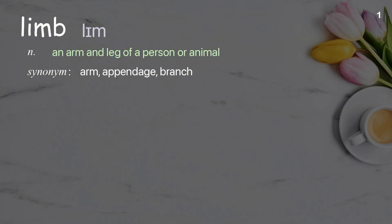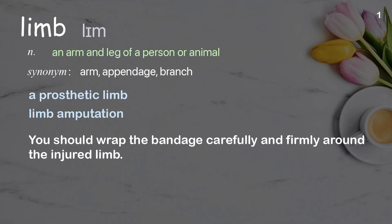Limb: an arm and leg of a person or animal. Examples: a prosthetic limb; limb amputation. You should wrap the bandage carefully and firmly around the injured limb.